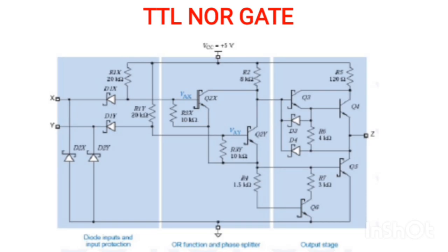Q4 on means we go to the high state, and Q5 on means the output becomes zero state. Now, for the working principle of TTL NAND gates: the NAND gate truth table shows that when both inputs are zero, the output becomes one; all remaining conditions produce zero. Now we verify the case x=0, y=0. The diode function: when the anode voltage is greater than the cathode, the diode is forward biased; when cathode voltage is greater than the anode, the diode is reverse biased.